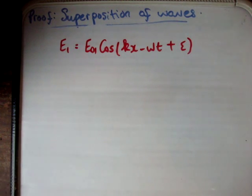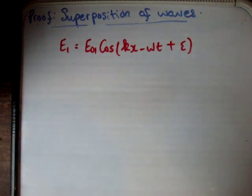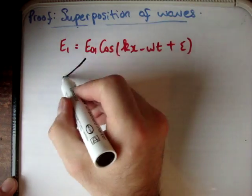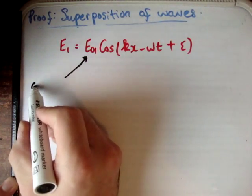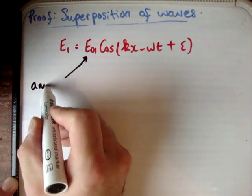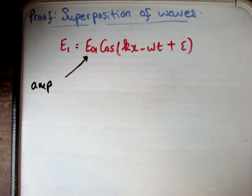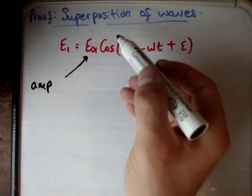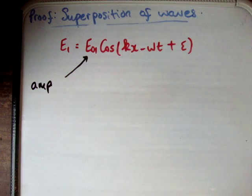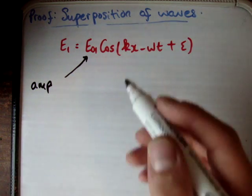E01 is the initial amplitude of the electric field — the amplitude. Next, we have a cosine, because we know waves essentially move as sinusoids, so we can describe them by either a cosine or a sine. I'm going to use a cosine in this case.